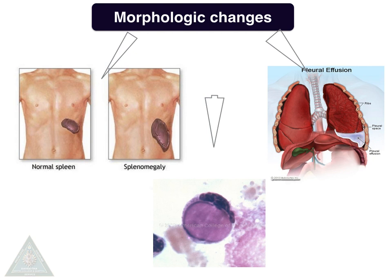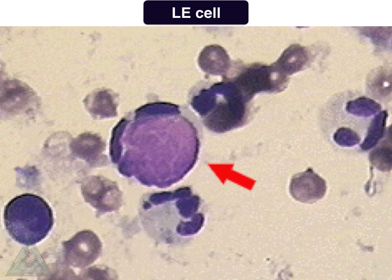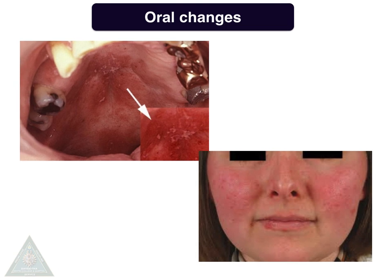Deposition of the LE cell, or hematoxylin body, is found in other organs and is very characteristic of lupus. The LE cell is a neutrophil that has engulfed the denatured material of another neutrophil or macrophage, appearing as a hematoxylin body inside the neutrophil, indicated by the red arrow. The oral changes include lichenoid changes in the palate or other areas of the oral cavity, and if the lips are involved, it is called lupus cheilitis.